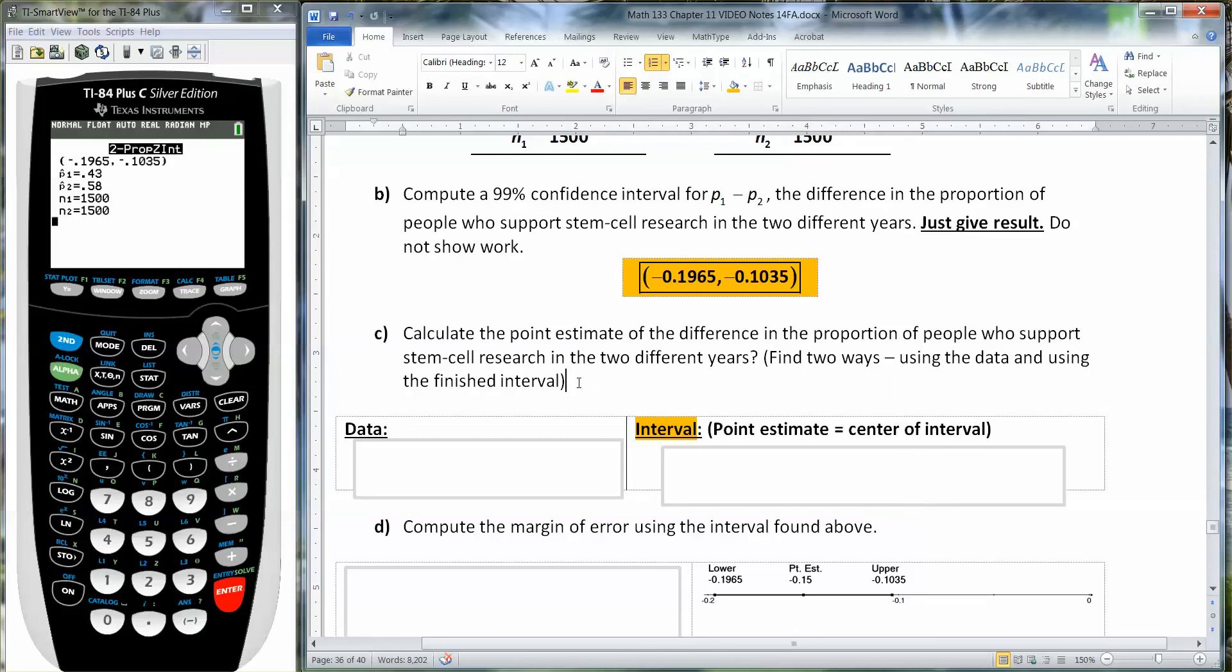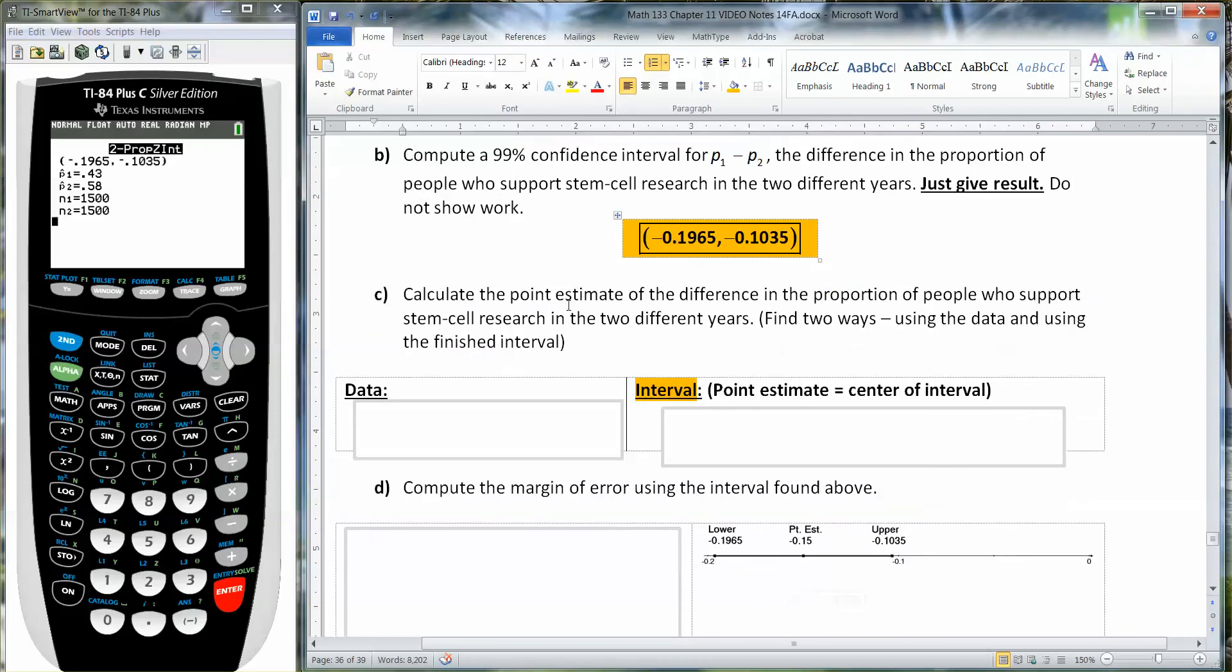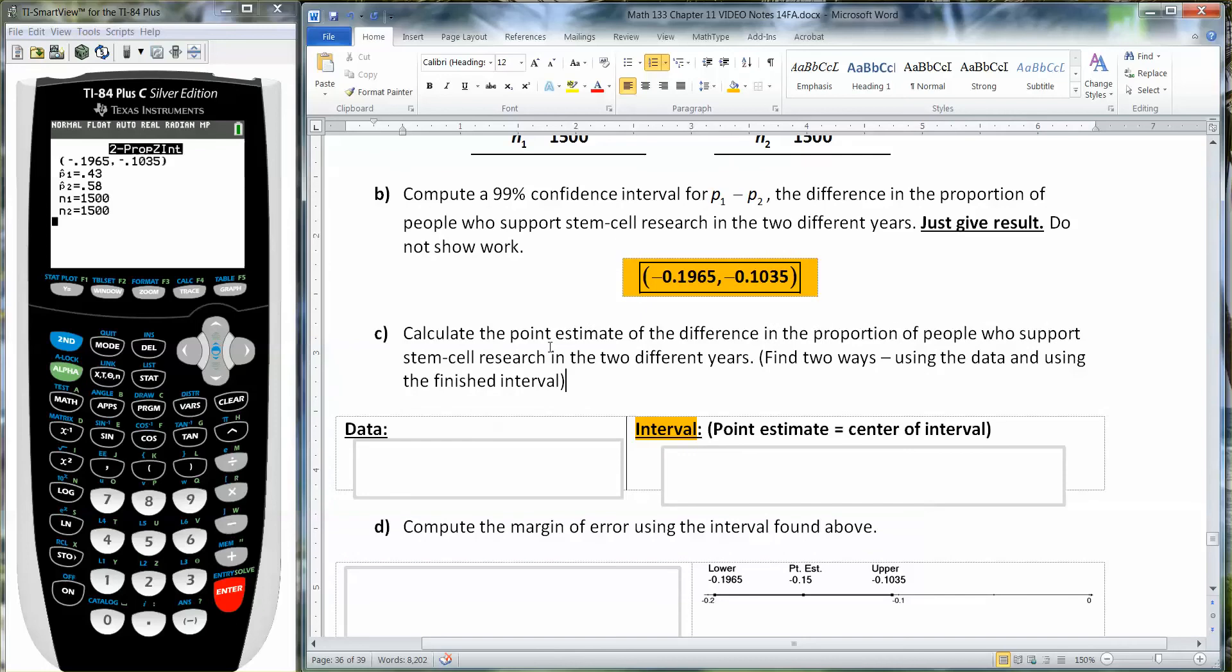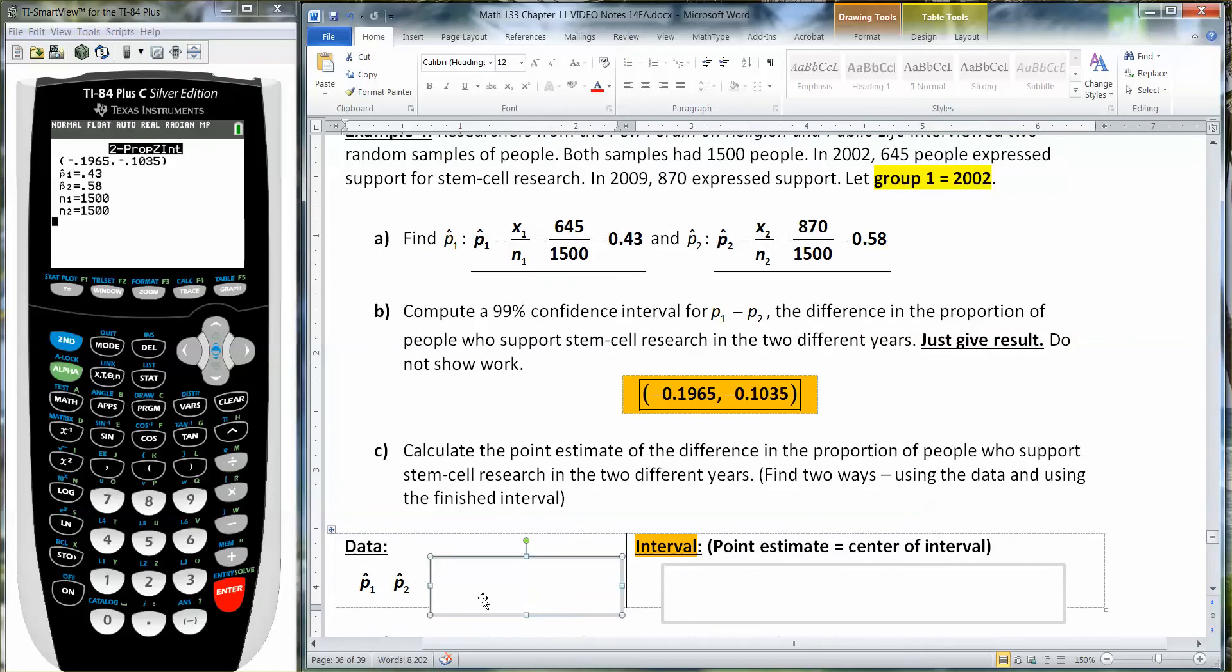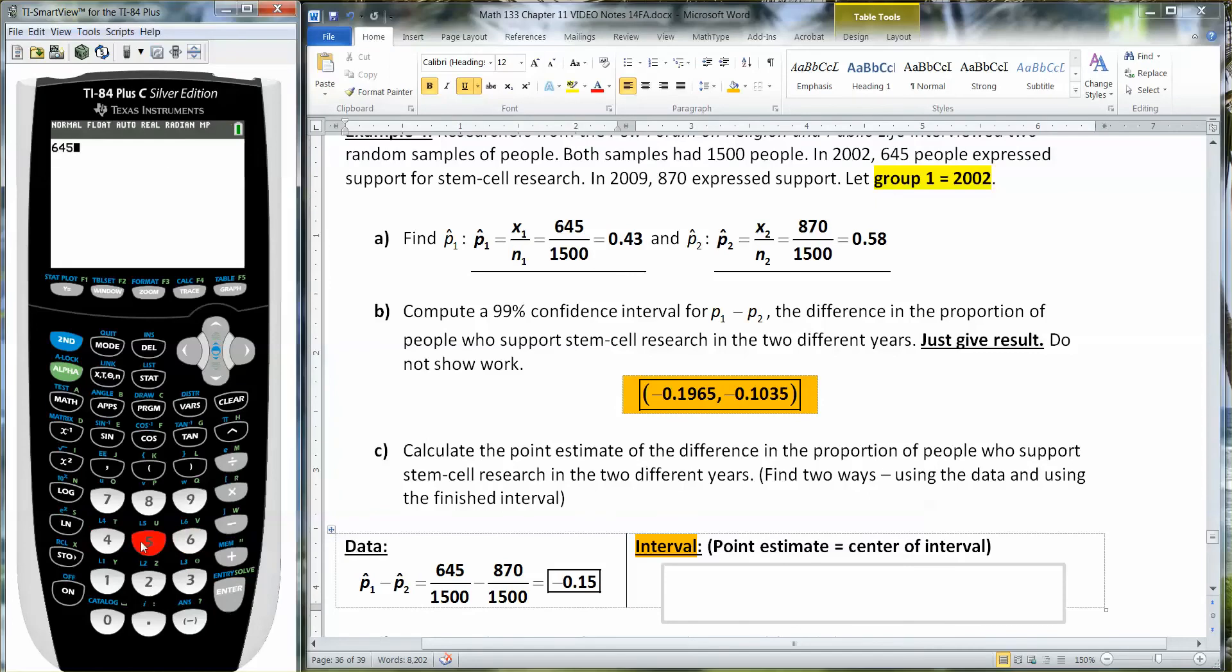Calculate the point estimate of the difference in the proportion of people who support stem cell research in the two different years. That's not a question. That's a statement. I will fix that. Now, from the data, that would be p1 hat minus p2 hat, right? But we already know p1 hat and p2 hat because we found them up here. Now, granted, we could use the decimals, but it's a little bit more accurate to use the fractions. So you get negative 0.15 right there. So that's using the data that was found above.